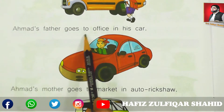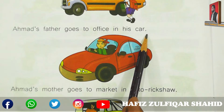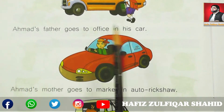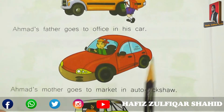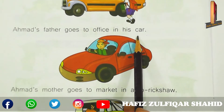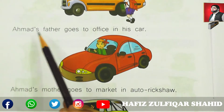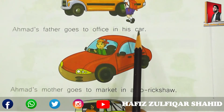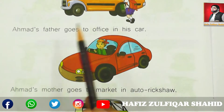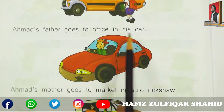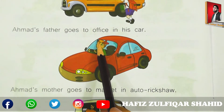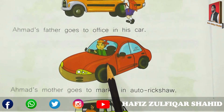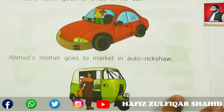Ahmad's father goes to office in his car. Ahmad کے father office کیسے جاتے ہیں؟ By car. Ahmad's father goes to office in his car. Ahmad کے father اپنی گاڑی میں office جاتے ہیں. So car is a transport.